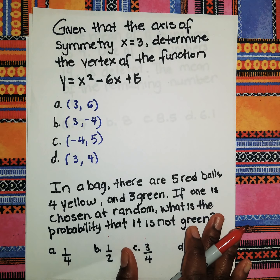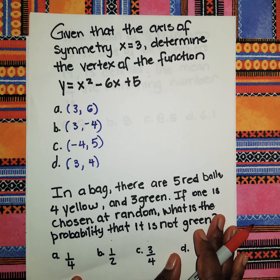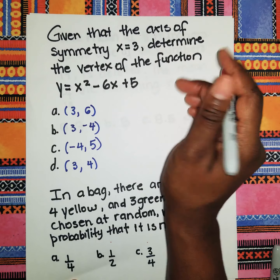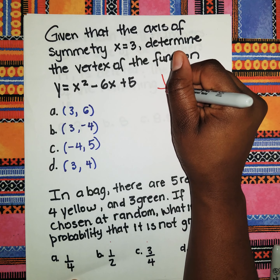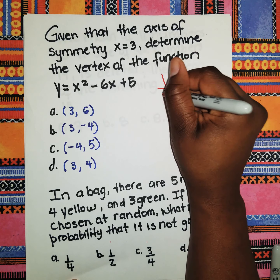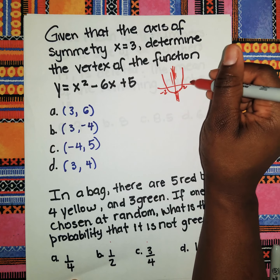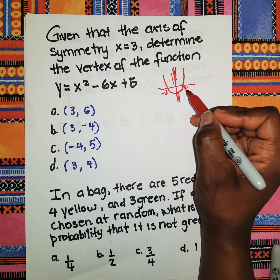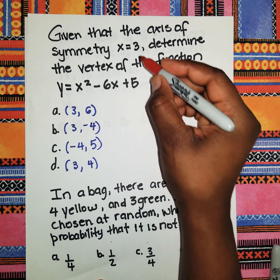Moving on to the next question: given that the axis of symmetry is x = 3, determine the vertex of the function y = x² − 6x + 5. The axis of symmetry is basically the midpoint of the two roots. For example, if the roots are −2 and 2, the midpoint is zero, so x = 0 would be the axis of symmetry. Given x = 3, we need the y-value — the turning point — so we substitute x = 3 into the function.